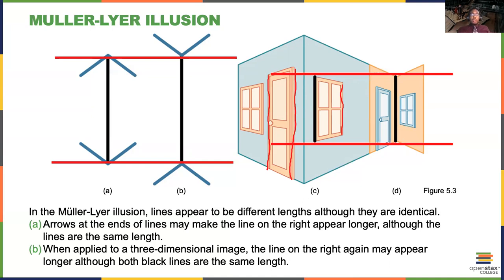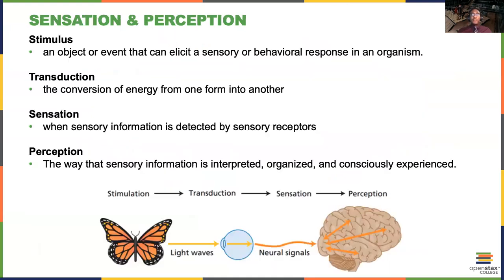So these optical illusions provide us with great examples of how sensation and perception are not the same. When I say sensation I'm referring to the physiological processes that our senses use to take in information from the world. Whereas when I say perception I'm talking about the psychological processes the ways in which we interpret information and organize information and consciously experience information.